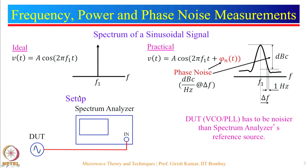The measurement setup is quite simple. The DUT, which is typically a VCO, signal generator, or a PLL, is connected to the input of a spectrum analyzer and the measurements can be done accordingly. For phase noise measurements, the DUT must be noisier than the spectrum analyzer's reference source; only then can the spectrum analyzer measure the phase noise of the DUT.